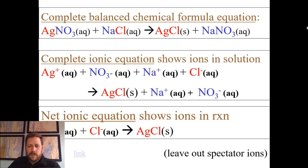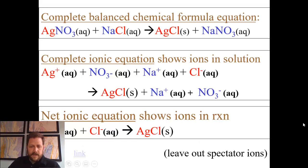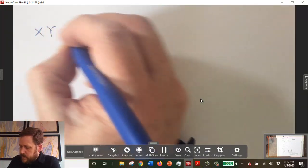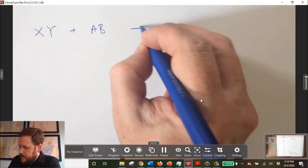Here's the example we looked at before. The complete ionic equation shows all ions in solution, and the net ionic equation reduces it to what actually changes. Silver ions and chloride ions existed as dissociated ions to begin with, but in the products they've formed a solid crystalline precipitate. It's worth considering the possibility that a precipitate may not form at all — we'll need to use the solubility rules to decide all the various outcomes. If no precipitate forms, there is no reaction.